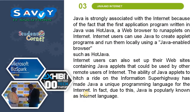Java and Internet: Java is strongly associated with the Internet because of the fact that the first application program written in Java was Hot Java, a web browser to run applets on the Internet. Internet users can use Java to create applet programs and run them locally using a Java-enabled web browser such as Hot Java. Internet users can also set up their websites containing Java applets that could be used by other remote users of the Internet. The ability of Java applets to hitch a ride on the information superhighway has made Java a unique programming language, popularly known as the Internet language. Java is introduced for the development of Internet applications.